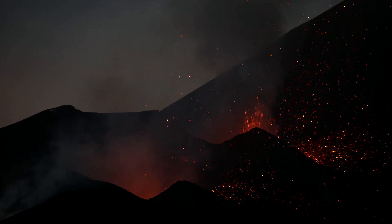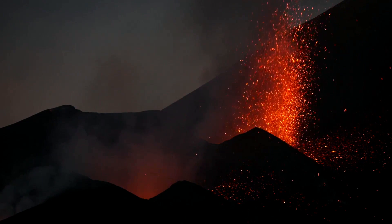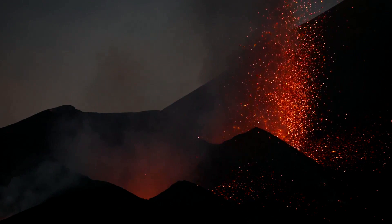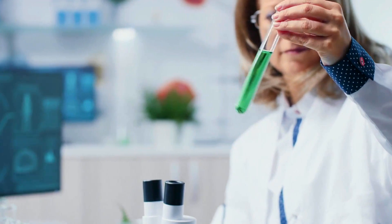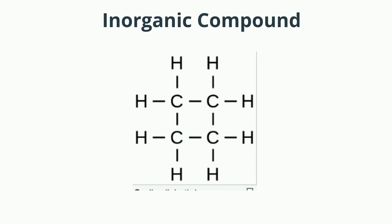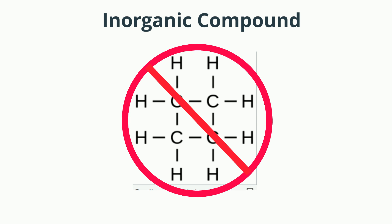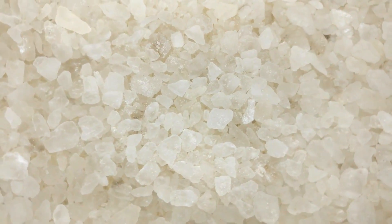Naturally occurring means it was formed naturally by the earth — minerals are not made by humans in a lab. An inorganic compound is typically a chemical compound that lacks carbon and hydrogen bonds. Typically, these compounds were never alive, such as salt and water.